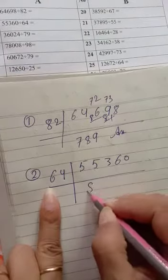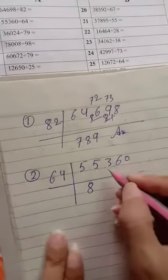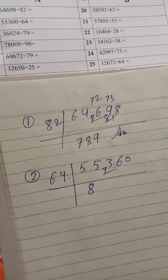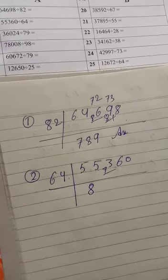55 minus 48 is 7. This one is 73. 8 times 4 is 32. 73 minus 32 is 41.